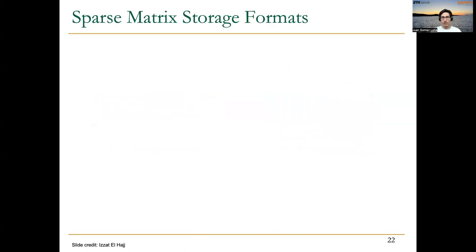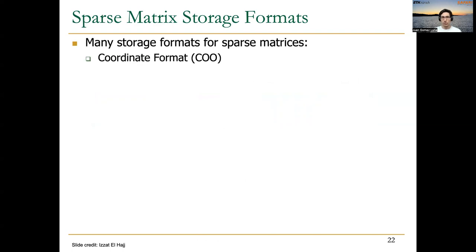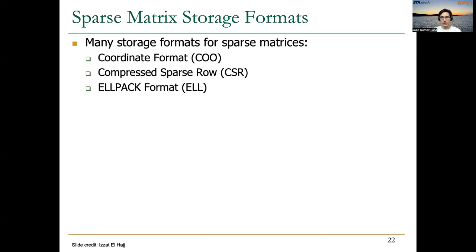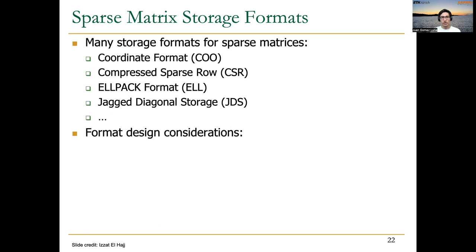Traditionally, there are many storage formats for sparse matrices. The most well-known ones are Coordinate Format or COO, and Compressed Sparse Row or CSR, which we are going to introduce today. But there are other more sophisticated formats that can probably result in better performance for some kernels and some algorithms on GPUs, such as the ELLPACK format, ELL, the Jagged Diagonal Storage or JDS, and formats based on bitmaps that are also very efficient in storage for certain matrices.